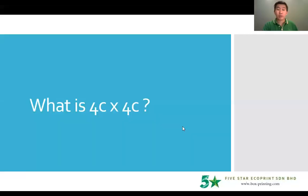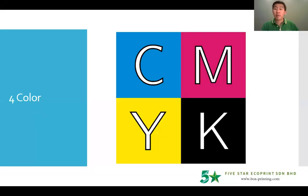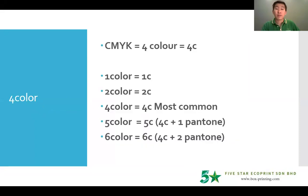Let's look into it. In our previous video, we talked about four color, which stands for cyan, magenta, yellow, and black. These are normally called process colors, which is CMYK. Four color is the most common color that we print, especially in Malaysia.